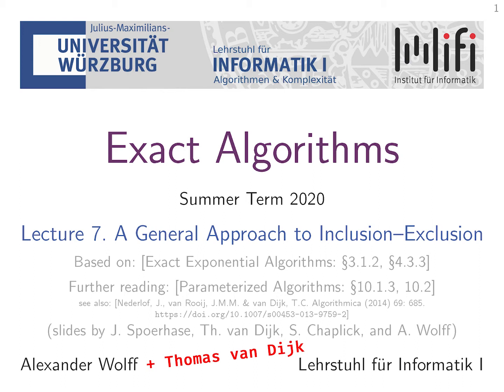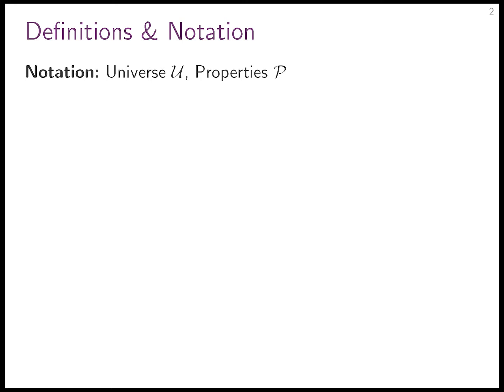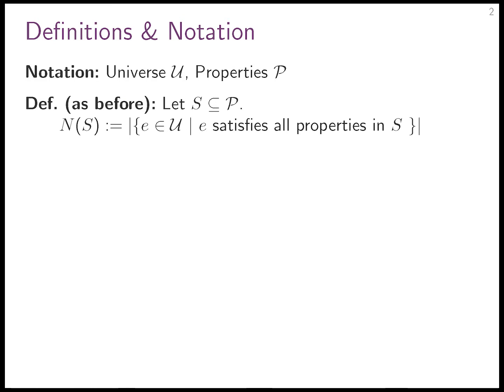Let's start with some old and some new notation. We have a universe of items U, and we have a set of properties P. And then, as before, for some subset S of the properties, N(S) is the cardinality — the number of elements in the universe such that this element has all the properties in S.